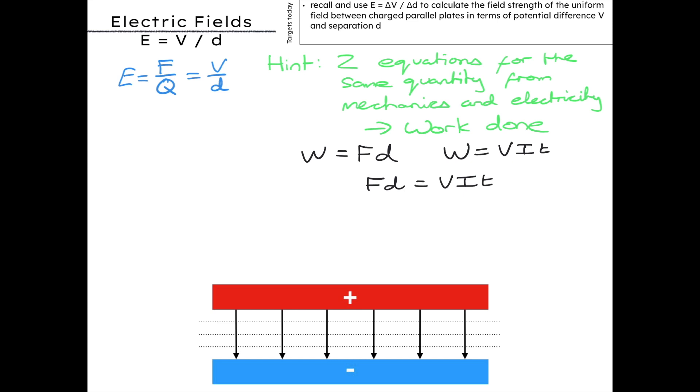So rearrange to F equals VIt over D, then put it into the defining equation for electric field strength. So E equals F over Q becomes E equals VIt over DQ.